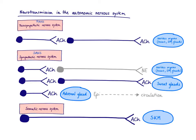Lastly, let's consider the somatic nervous system. Although it has nothing to do with the autonomic nervous system, it also uses acetylcholine as a neurotransmitter. In contrast to the autonomic nervous system, the somatic nervous system is a one-neuron system — acetylcholine released onto skeletal muscle results in contraction of muscle fibers. Knowing that the somatic nervous system uses acetylcholine helps predict side effects of drugs that affect acetylcholine.